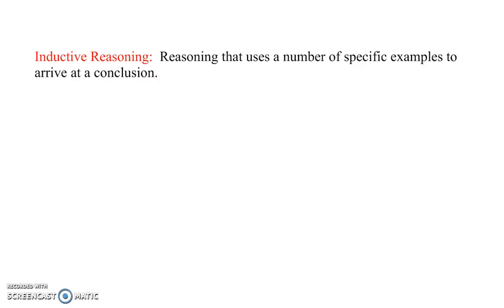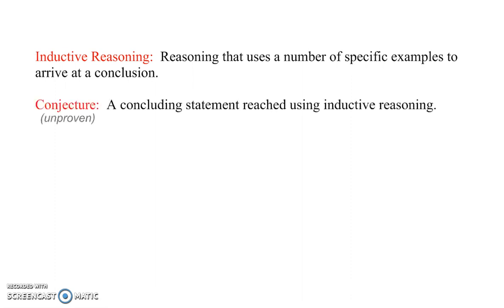Inductive reasoning is reasoning that uses a number of specific examples to arrive at a conclusion. A concluding statement reached using inductive reasoning is called a conjecture. A conjecture is an unproven statement. So we look at something, we see it appears to be this way, and then we make our conjecture from that.